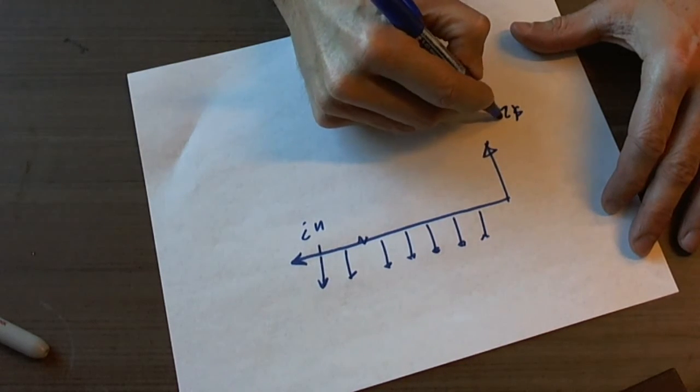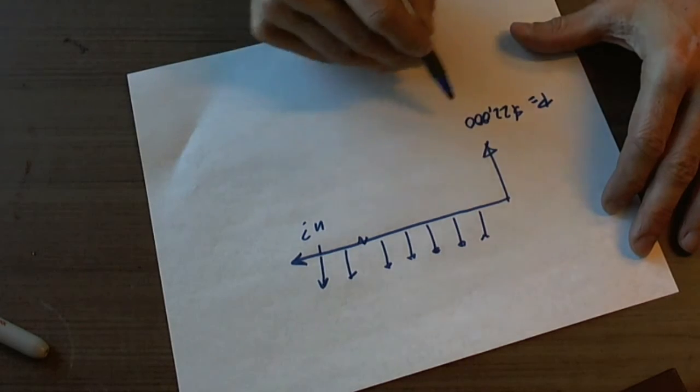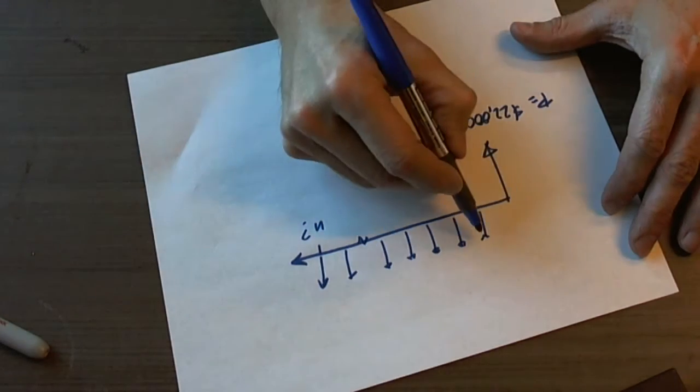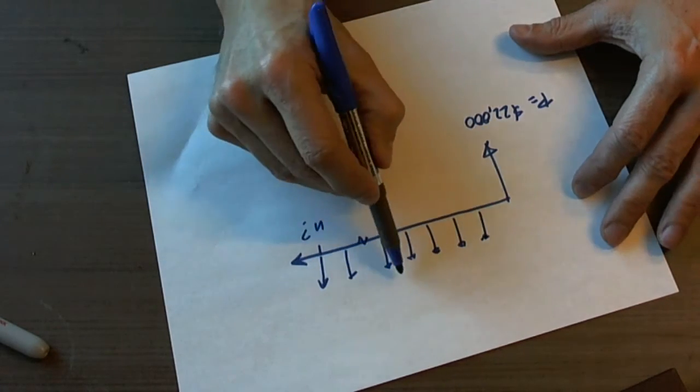So if we started with a loan of $22,000, we can say that would equal the present value of this series of payments, but it doesn't tell us what each one of these payments is.